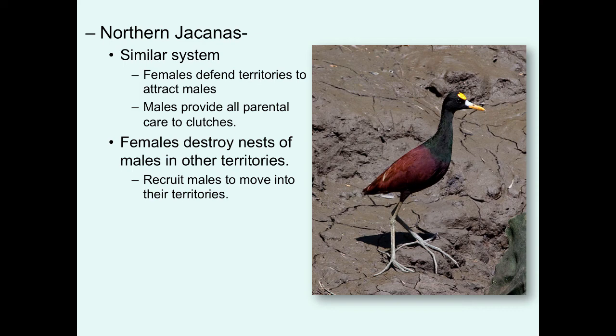A similar system is seen in northern jacanas: females defend territories to attract males, males provide all parental care to each clutch the female lays, and females are very aggressive — they destroy nests in neighboring territories of males already recruited by a neighboring female to recruit those males themselves. While this seems puzzling — why would a male join a female who destroyed his nest? — the logic is that the original female couldn't protect her territory, making future success unlikely, while the aggressive female who destroyed the nest is likely capable of providing better protection, making reproductive success more probable.